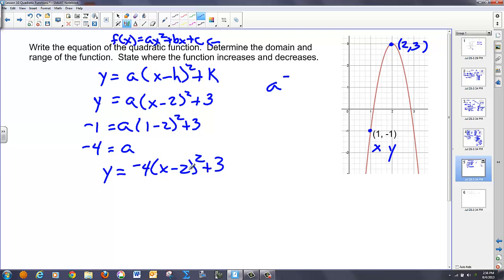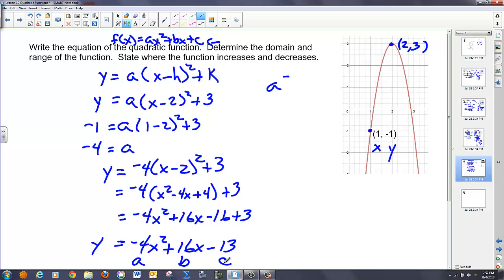But it's not in this form of ax² + bx + c. I can get it in this form by foiling this out and combining like terms, so let's do it. -4(x² - 4x + 4) + 3, which is -4x² + 16x - 16 + 3, or in the end, y = -4x² + 16x - 13. And there is my a, my b, and my c value.